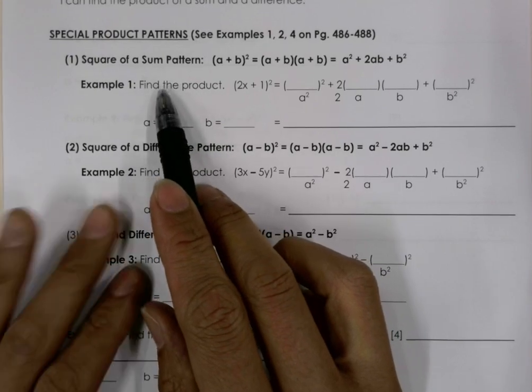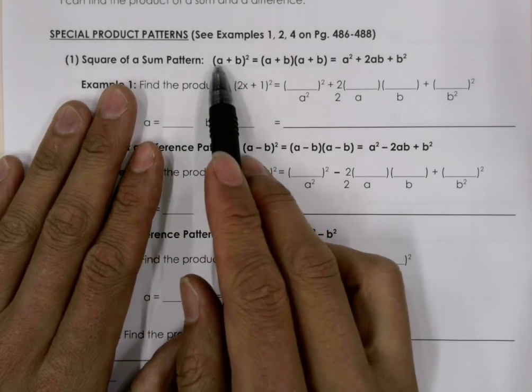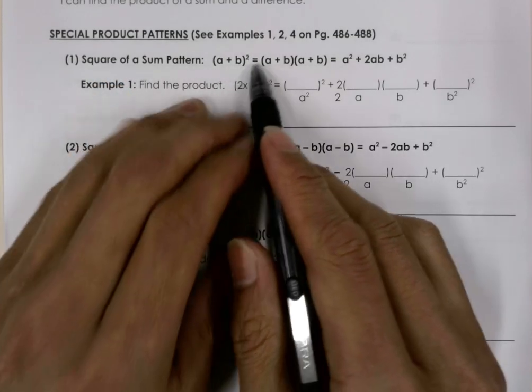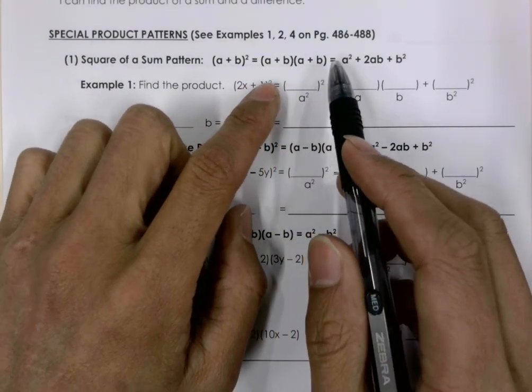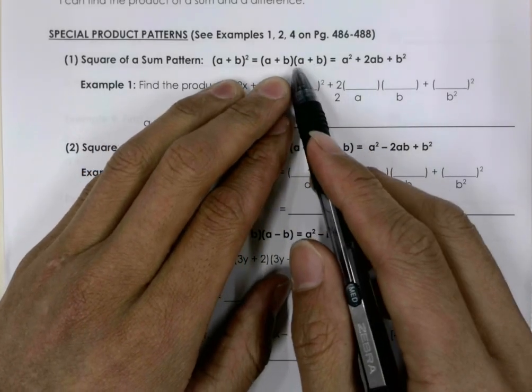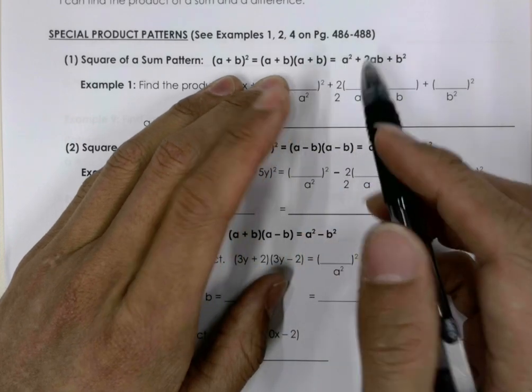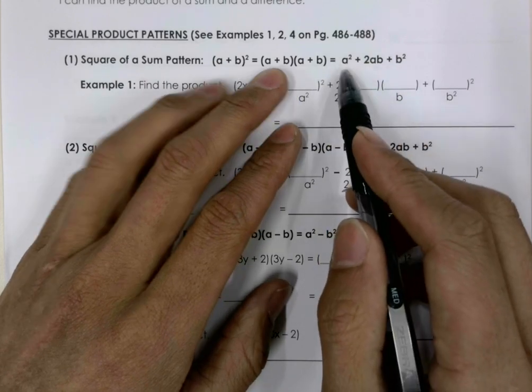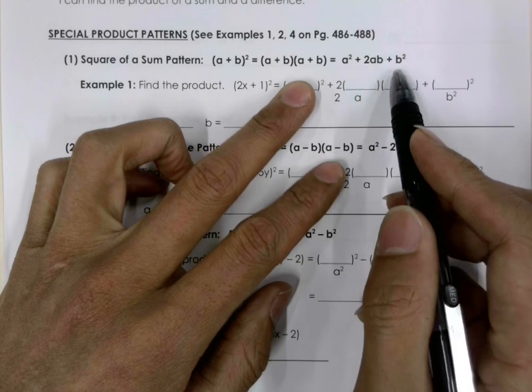So we have the first pattern, the square of a sum pattern. Here we have two numbers that are summed and taken to the power of 2. So when this is the case, what we have is (a + b) times (a + b). And so if we use the FOIL method, or the distributive method, or the time-stable format, we're going to get the same result: a² + 2ab + b².